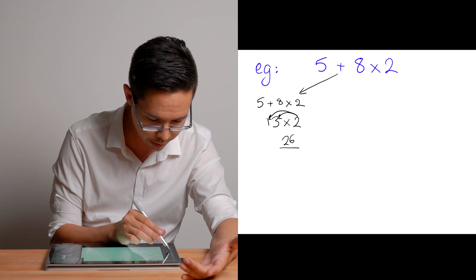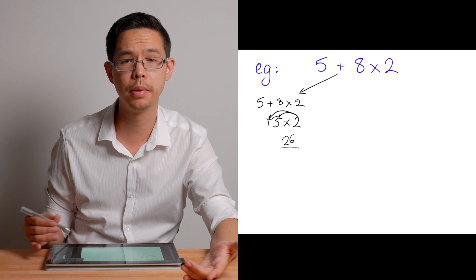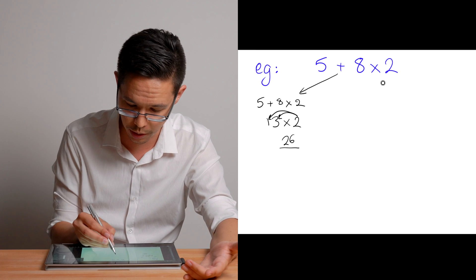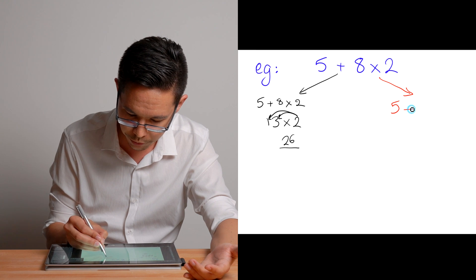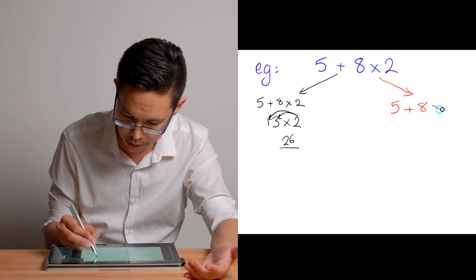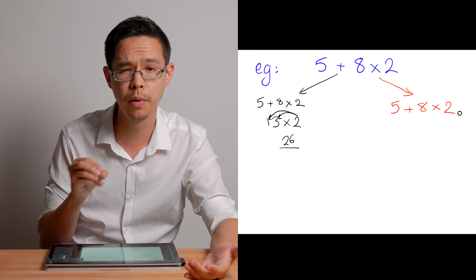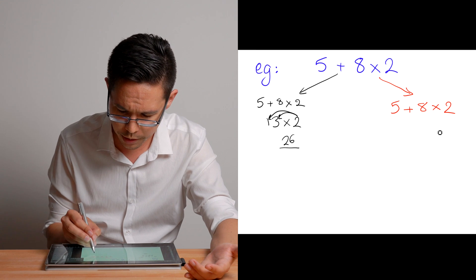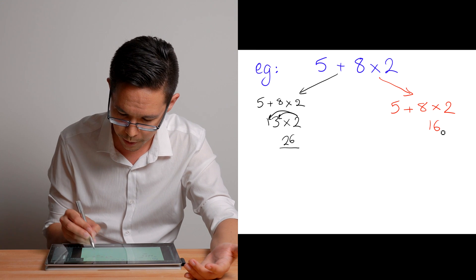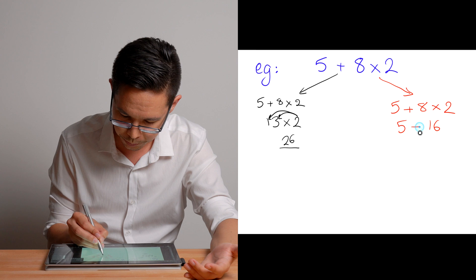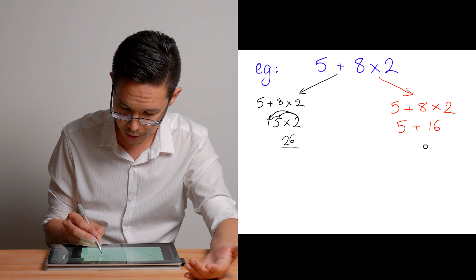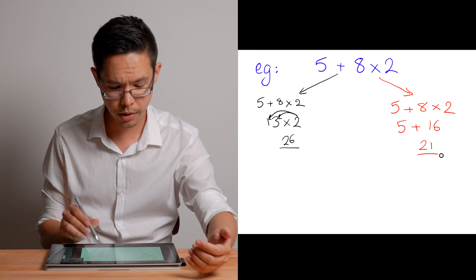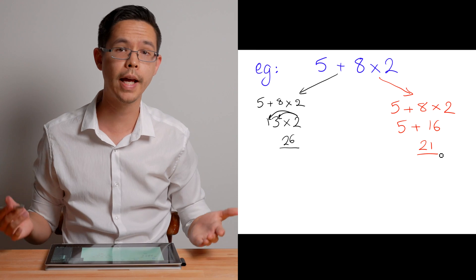What if I do the problem, but I start with the multiplication first? So again, I'm going to try it this side to show the comparison. So I'm just going to copy the question five plus eight times two. So if I start with multiplication first, then eight times two, well, that's going to be 16. And the five is here, five plus 16, that gives me 21. Can you see how 26 or 21? I've got two different answers.